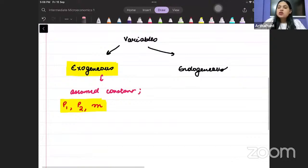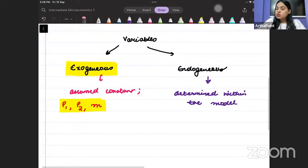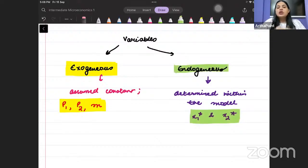And Beta, which is endogenous? Which is determined within the model. So what am I determining within the model? Within the model, I am determining the demand of the two goods, x1 star and x2 star. So Beta, this x1 star and x2 star, these are called as endogenous variables. Clear how much this is? Okay.